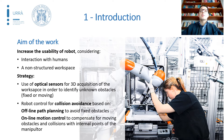Once the positions of the obstacles are known, a collision avoidance strategy for the robot can be developed, based on an offline path planning algorithm that allows to avoid fixed obstacles, and an online motion control algorithm that compensates for obstacles that move and avoids collisions between obstacles and internal points of the link chain of the manipulator.